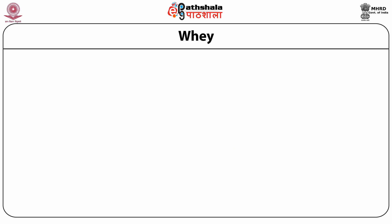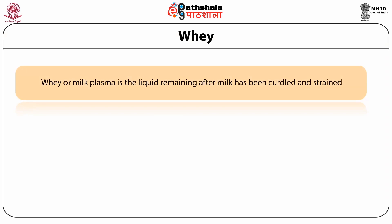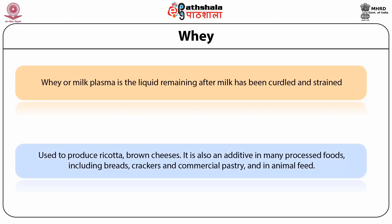The second fermented milk product is whey. Whey is the milk plasma — that is, the liquid which remains in the milk after the curdled portion of milk is taken out. Whey is sometimes used as a starter in the production of some types of cheese. It can also be added to many processed foods to increase their nutritive value and provide bacterial culture. Products which use whey as an ingredient include breads, crackers, commercial pastries and animal feeds.